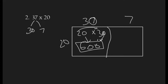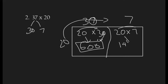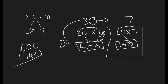Now we have to multiply 20 and 7. So 20 times 7 — 2 times 7 is 14, and then we bring the 0 down, so 140. Now we're going to add again: 600 plus 140. 0 plus 0 is 0, 4 plus 0 is 4, 6 plus 1 is 7. So our answer is 740.